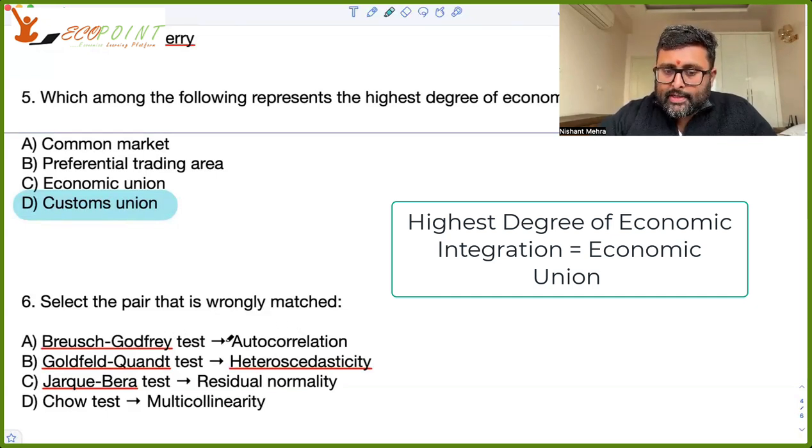Select the pair that is wrongly matched. Breusch-Godfrey test. It is used for autocorrelation. Yes. Goldfeld-Quandt test. This is used for heteroscedasticity. Yes. Jarque-Bera test. Used for normality. Yes. Chow test is used for structural breaks. For multicollinearity, you rather use variance inflation factor. So what is wrongly matched is Chow test.